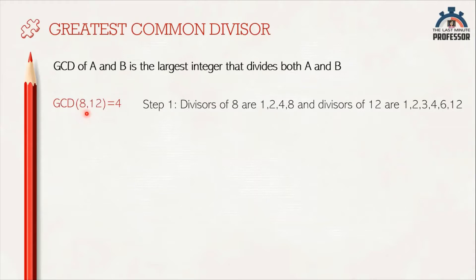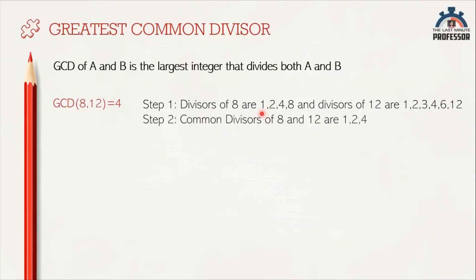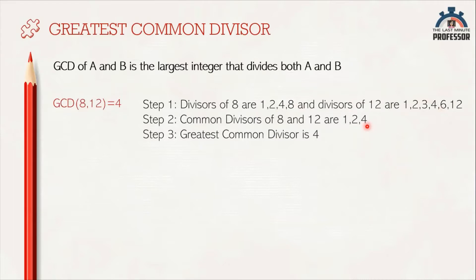As the next step, find the divisors that are common to both numbers — that is, for 8 and 12, what are the common divisors? The common divisors for 8 and 12 are 1, 2, and 4. So, GCD is the greatest number among the common divisors, that is 4. So, the GCD of 8 and 12 is 4.